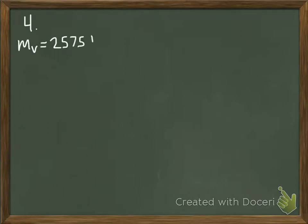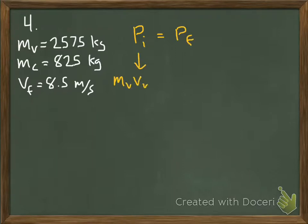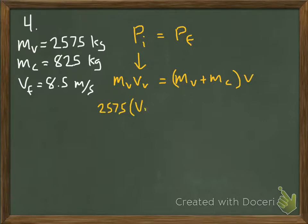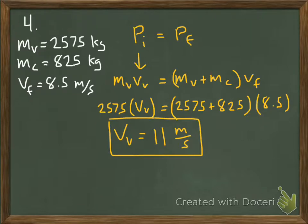In question four, we're given the mass of a van and the mass of a compact car. After the collision they move together at a given velocity, and we need to find the initial velocity of the van. Momentum must be conserved. Initially we have one moving body — the van; after the collision we again have one moving body — both cars together at a different velocity. My variable is V sub v, the velocity of the van, and we can solve for it.